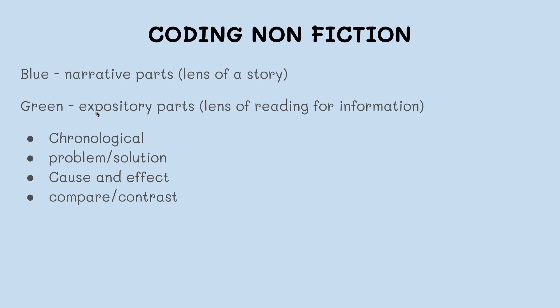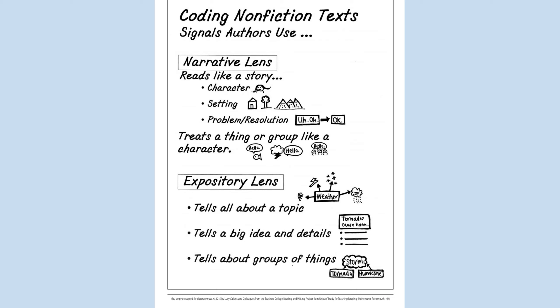Just to help us remember, in nonfiction structures we have chronological, problem-solution, cause and effect, and compare and contrast. You're going to have to push yourself really hard to think about what actual signals authors give us. A narrative reads like a story — there might be a character, a setting, a problem resolution, and it treats a thing or group like a character. If it's reading for information, an expository lens tells all about a topic — it might have a main idea and details, and it tells about groups of things.